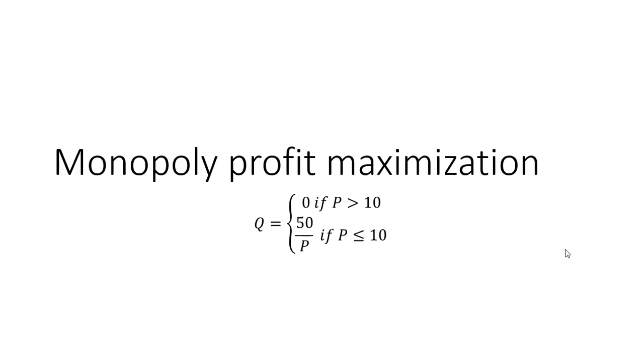Hello. In this video, we're going to look at monopoly profit maximization when the monopolist's demand curve takes on this form. A monopoly faces the following demand conditions. The quantity demanded is zero if the monopolist charges a price greater than $10.